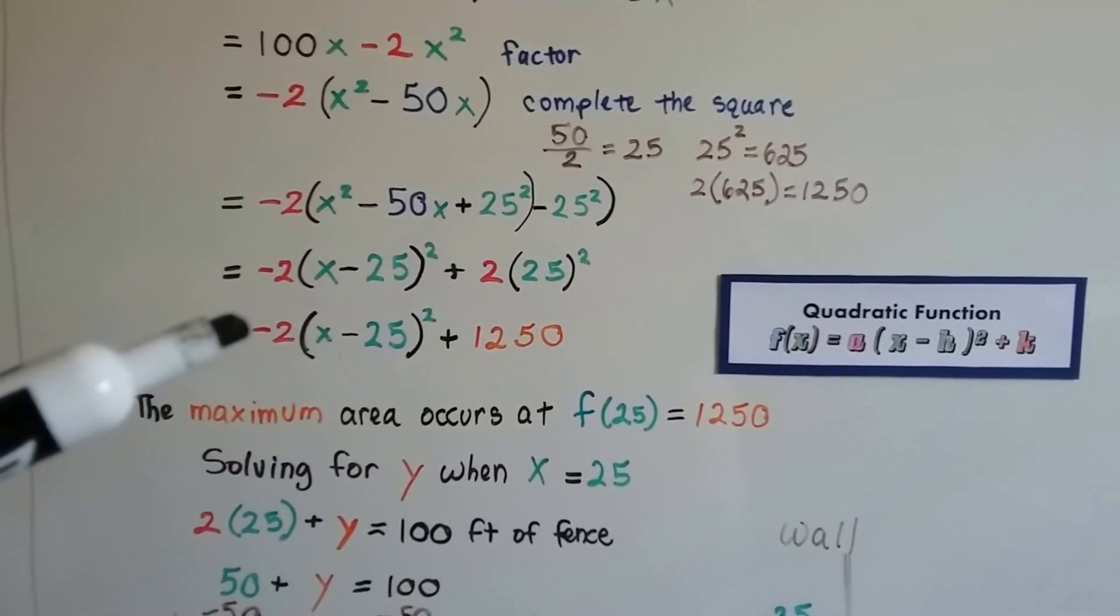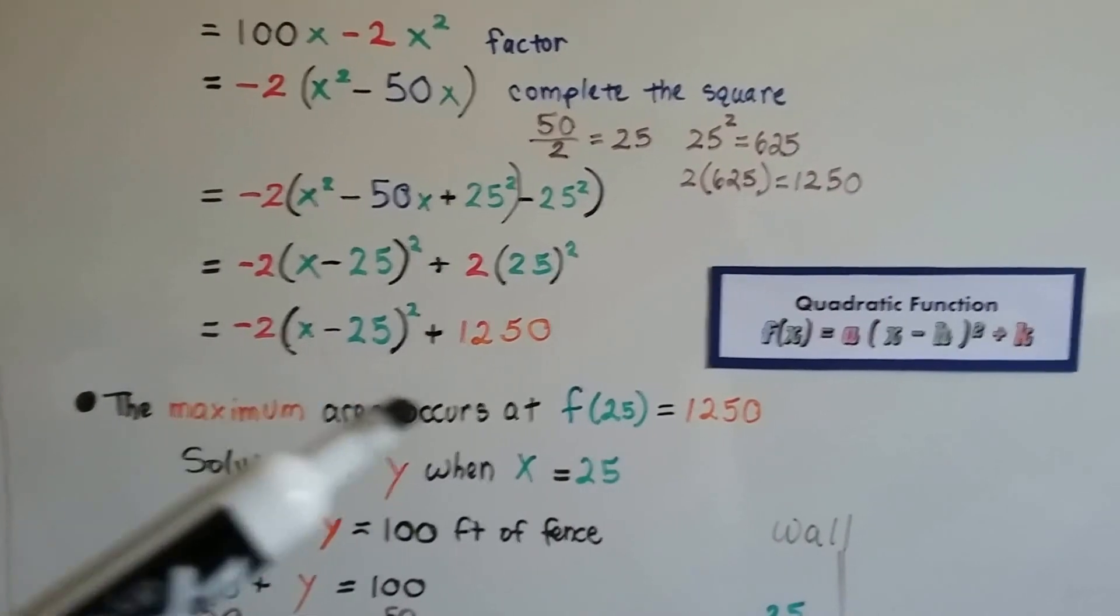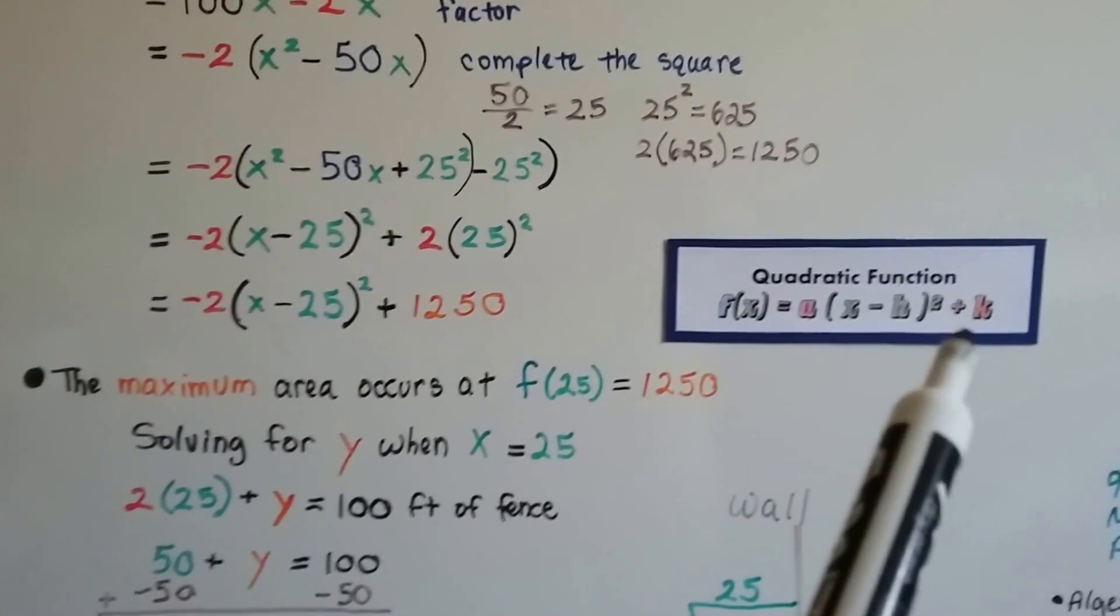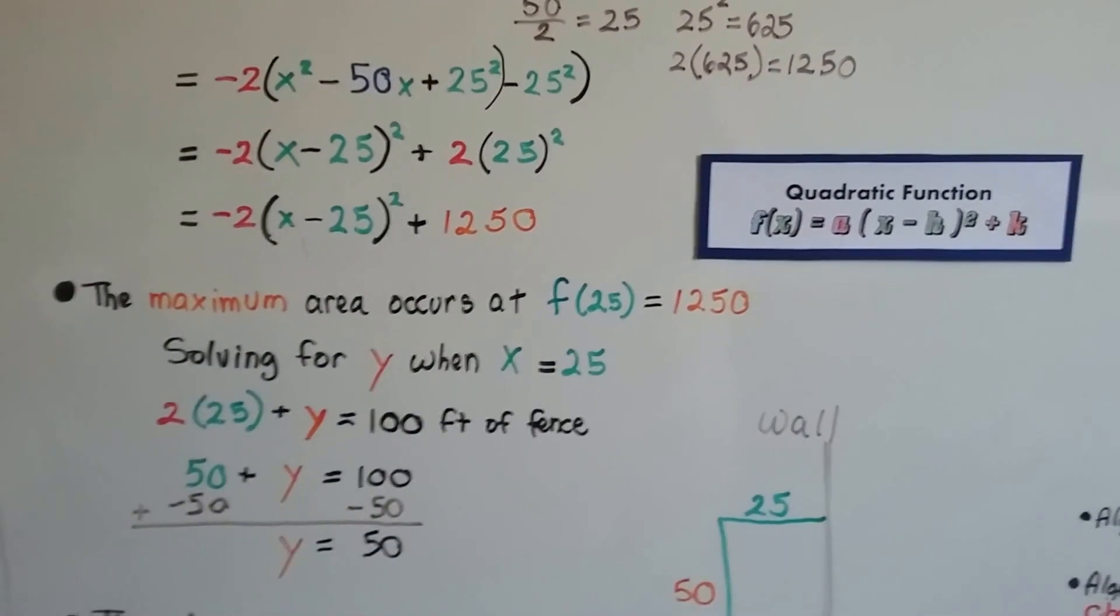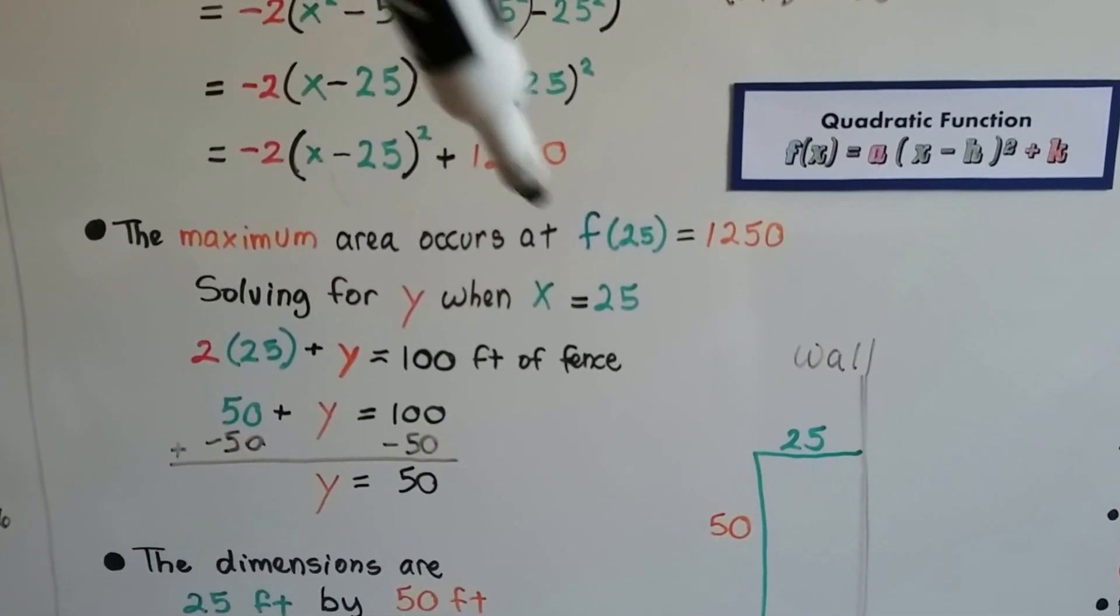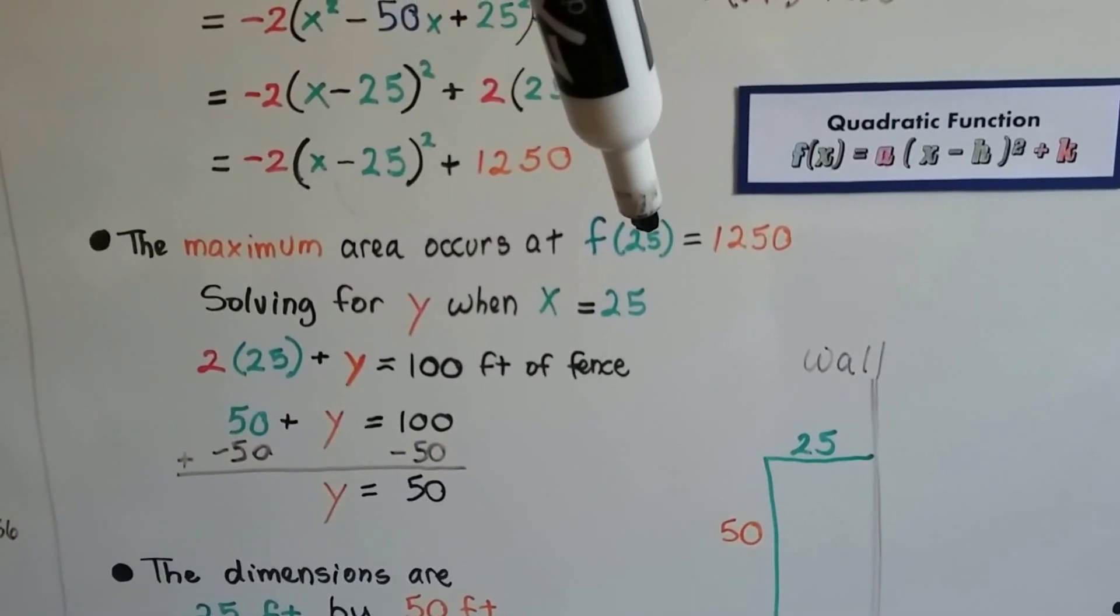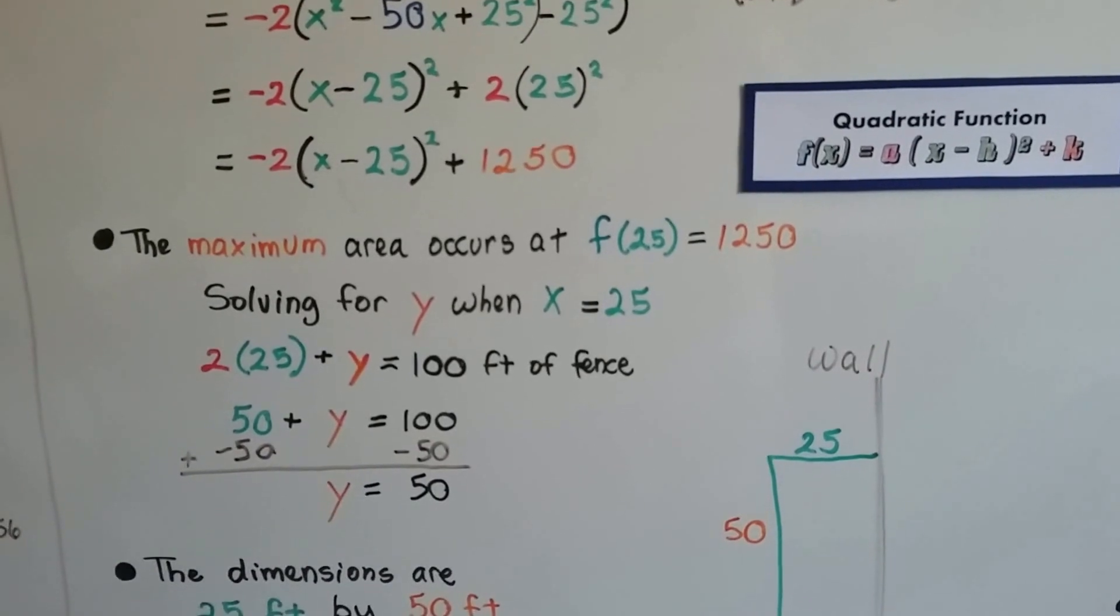We've got -2(X - 25)² + 1250. That's our K value. The maximum area occurs at the function of 25 equals 1250. That's our X value.